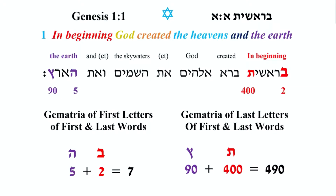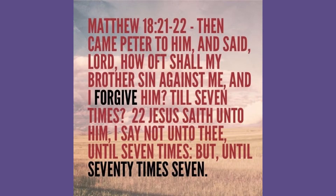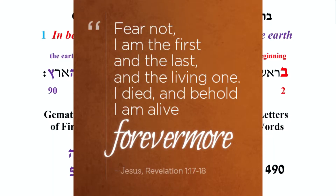Jesus was telling his Talmudim — his disciples were asking how many times should we forgive. He said, 'I say to you not 7 times, but 70 times 7 times.' And 70 times 7 is 490. So I think — and I'm not making a definitive statement — but I think Jesus is making a tie back to the first and last letters of Genesis 1:1. I think it's just absolutely beautiful.